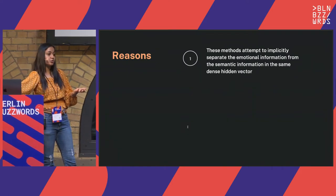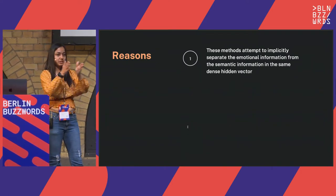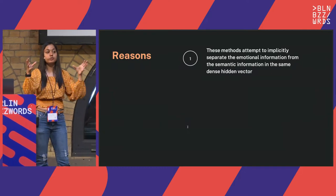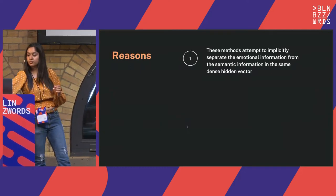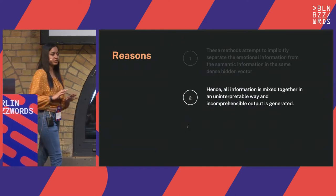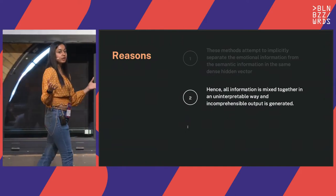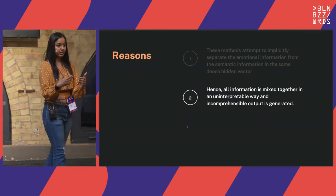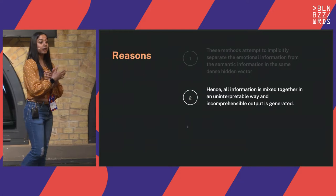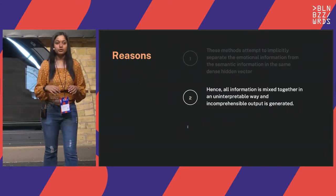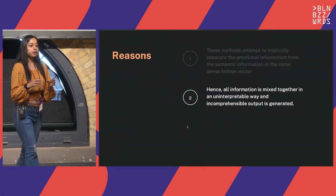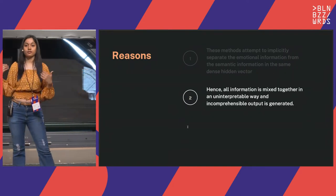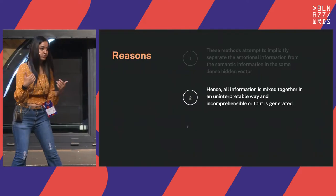This happens because we use the same dense network and separate it into two different parts, so we don't have both parts together. The second reason is that all information gets mixed up — not combined in a useful way, but in an incomprehensible way. It becomes very difficult to find weighted embeddings to generate sentences that retain the semantic information from the previous one.